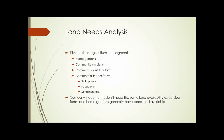To do a land needs analysis, divide the urban agriculture into segments: home gardens, community gardens, commercial outdoor farms, and commercial indoor farms. Indoor farms can be subdivided into hydroponics, aquaponics, containers, etc. Obviously, indoor farms don't need the same land availability as outdoor farms, and home gardens generally have some land available because they're at someone's home.